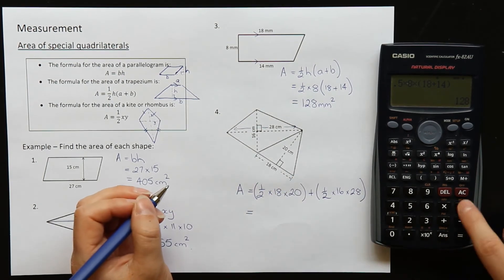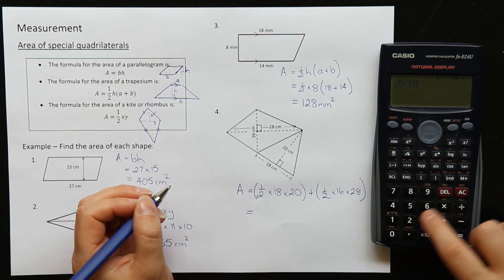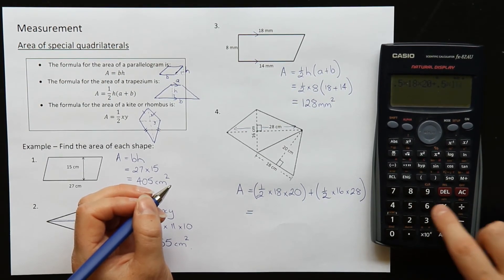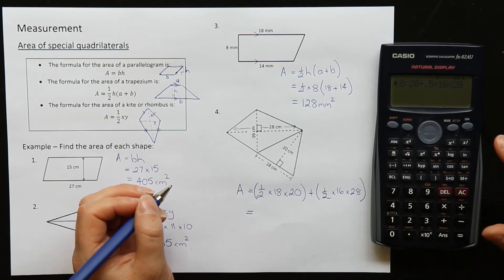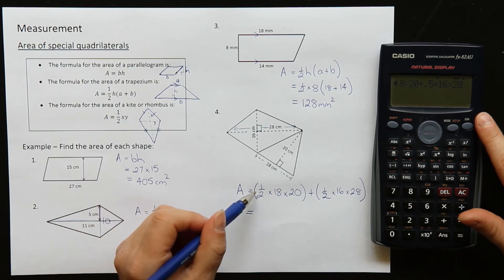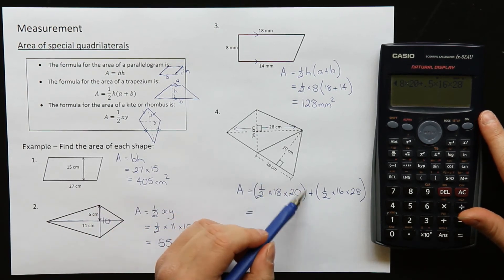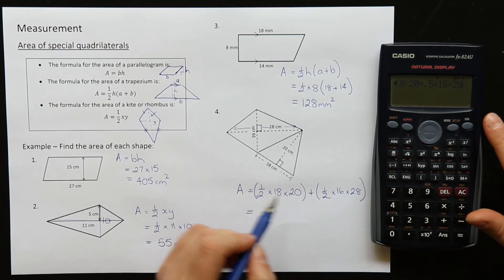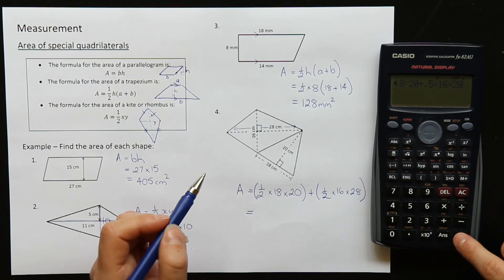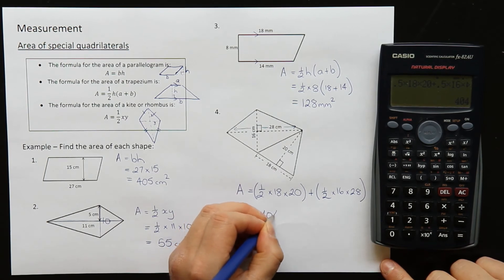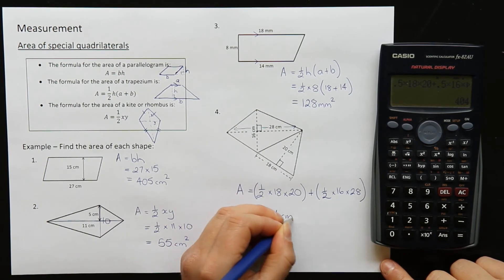So half times 18 times 20 plus half times 16 times 28. Notice that I didn't use the brackets when I'm calculating on my calculator. You don't actually need to have the brackets. It's just often nice to have them there so that you can see this is the triangle, this is the kite. Equals 404 centimeters squared.